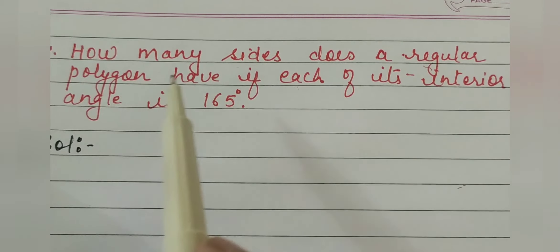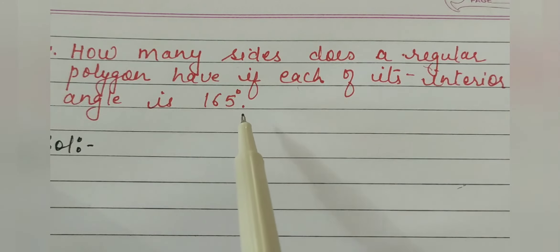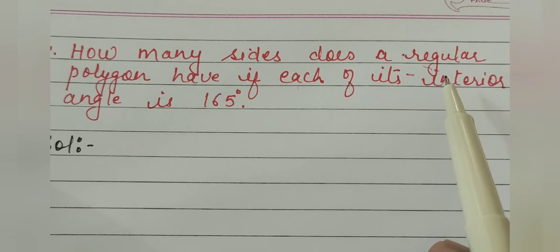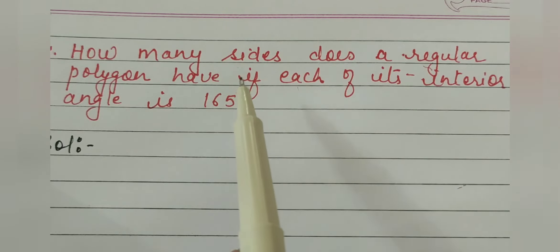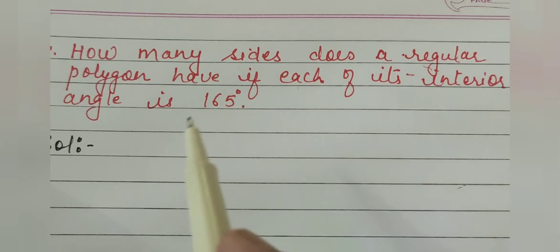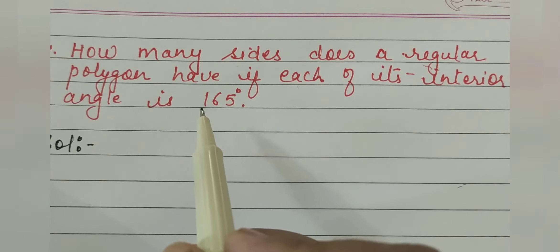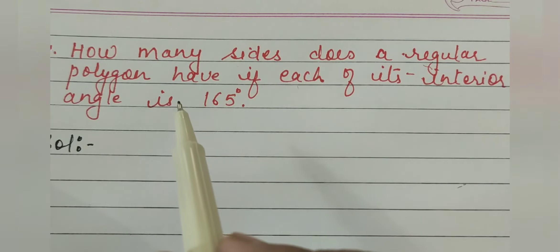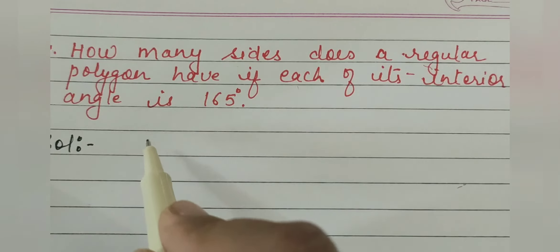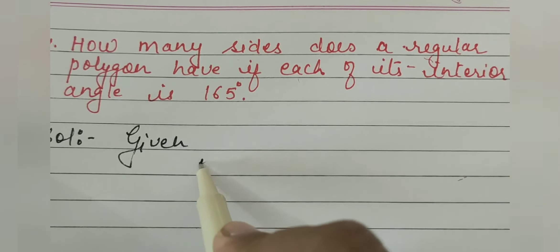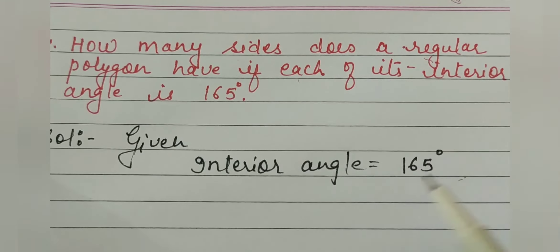Question number 4 of exercise 3.2: how many sides does a regular polygon have if each of its interior angles is 165 degrees? We need to find the number of sides. To solve this, we first find the exterior angle, because the sum of exterior angles of any polygon is always 360 degrees. Given: interior angle equals 165 degrees.